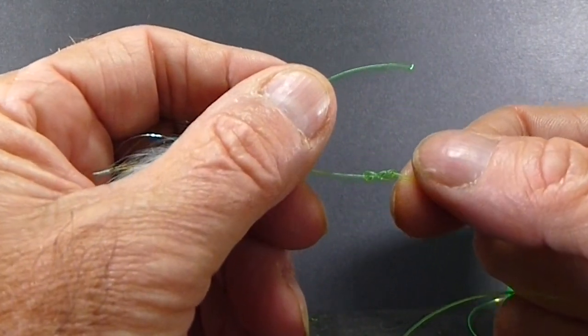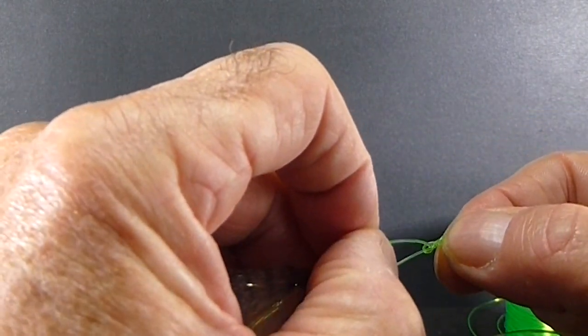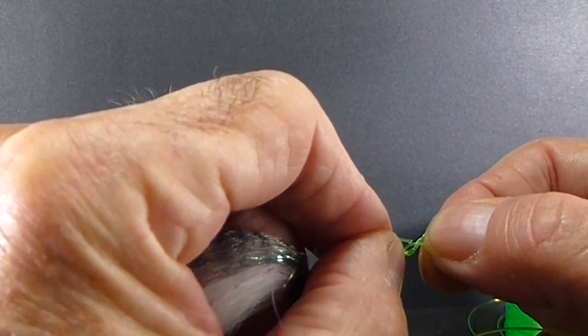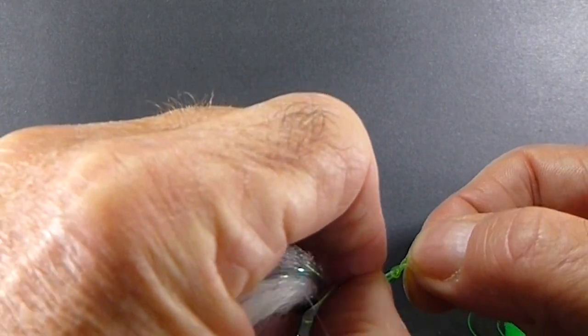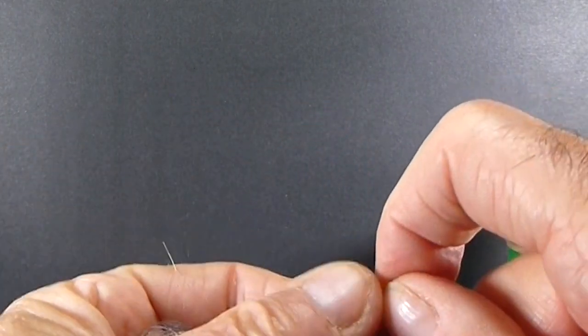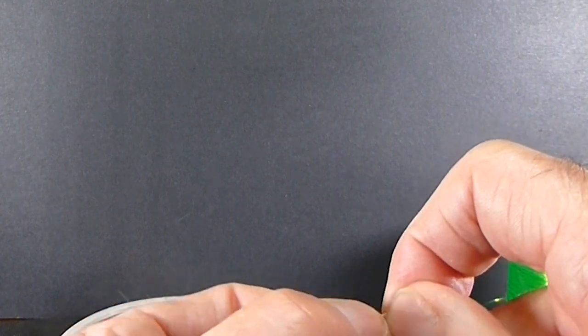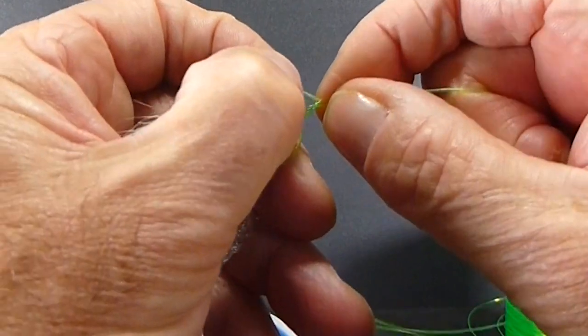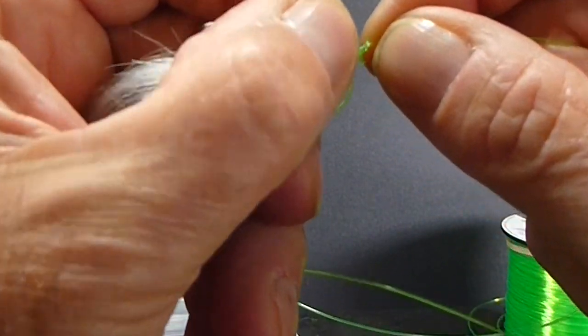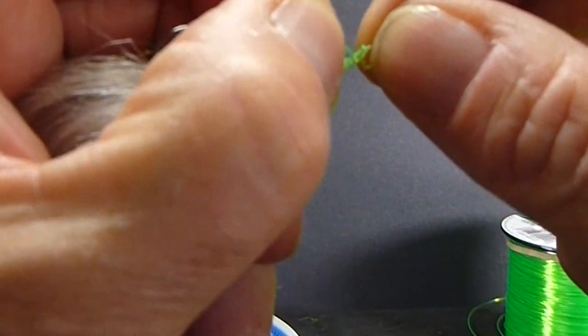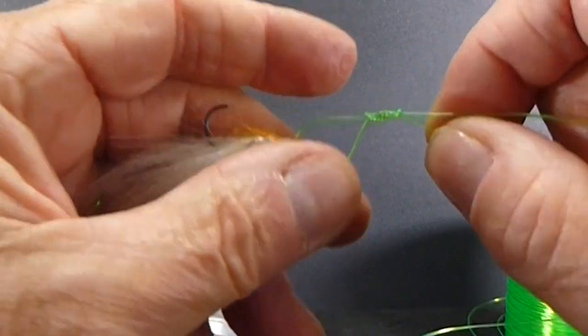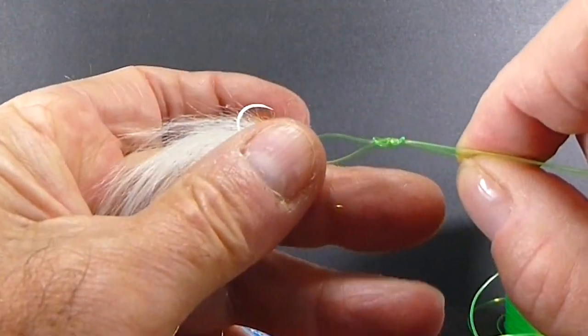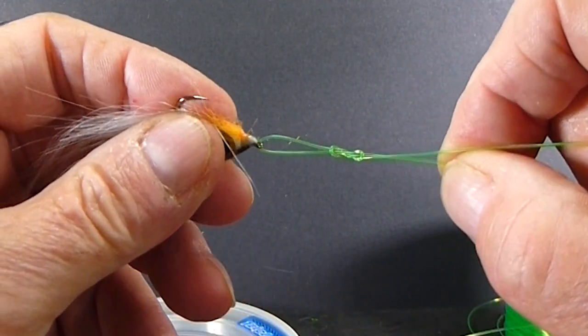Now we have that figure 8 down here. I'm going to just take the tag end, and follow that standing line, the main line back through. Just going back the way it came the first time. And it'll just lay right in there nicely. Right through the same way.